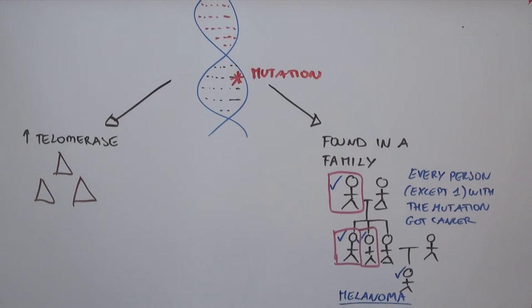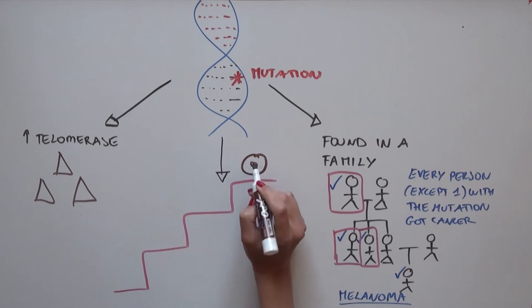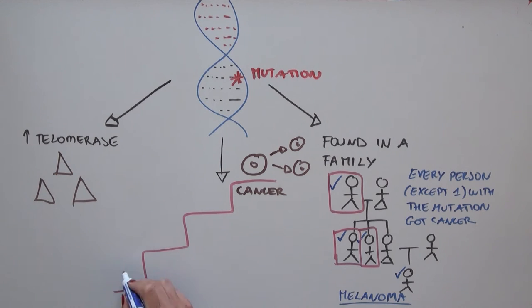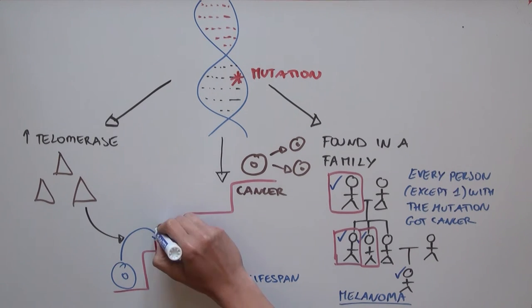So this strongly suggests that this mutation is doing more than just allowing cells that are cancerous to keep dividing. Instead, this suggests that this mutation is actually driving cells one step up the staircase. If these cells acquire more mutations, they will keep moving up the staircase until they become cancerous.